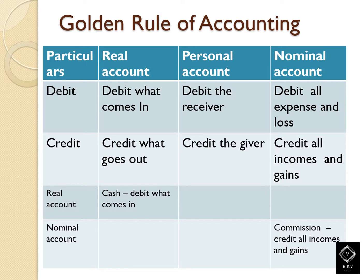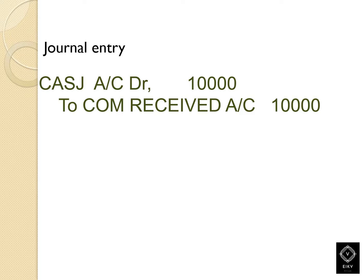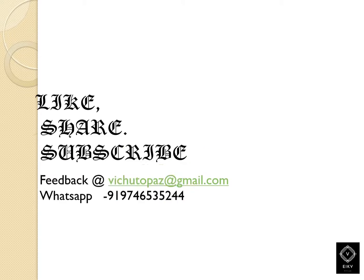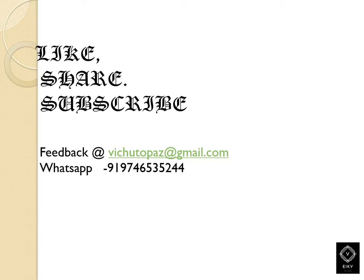Since commission is treated as an income, we need to credit the commission. So the journal entry is: Cash Account debit, to Commission Received Account credit, rupees 10,000 each. The narration will be: being received commission.